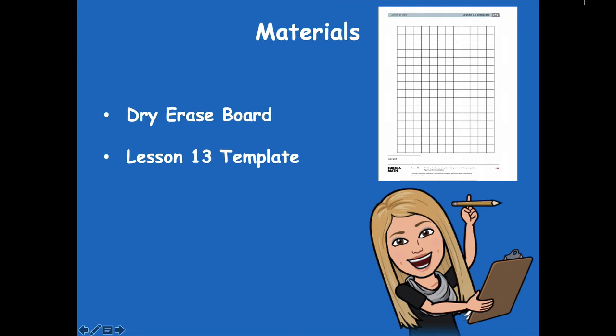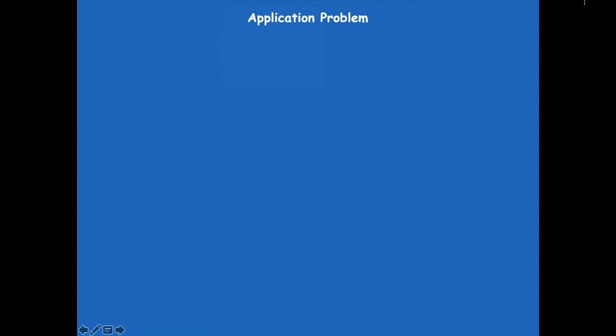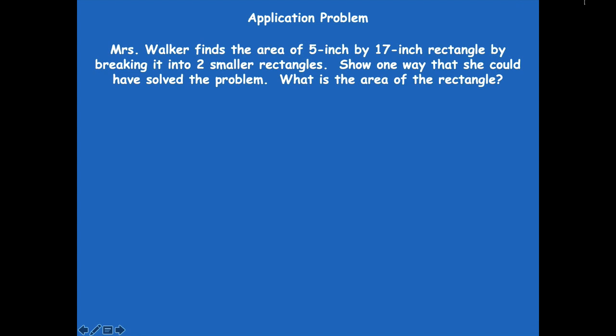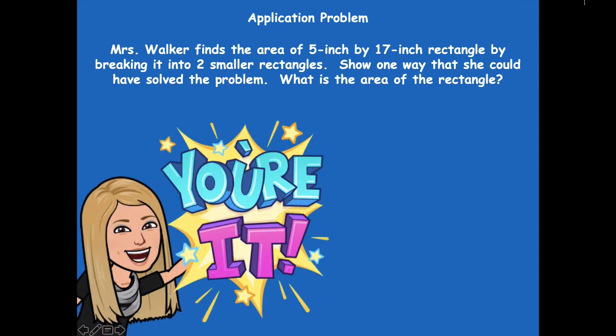We're going to start with our application problem. It says: Mrs. Walker finds the area of a 5-inch by 17-inch rectangle by breaking it into two smaller rectangles. Show one way she could have solved the problem, and find the area. Draw your own rectangle that's 5 by 17 inches, break it into two smaller rectangles to make it easier to multiply. Pause the video, solve this on your dry erase board, then click play.